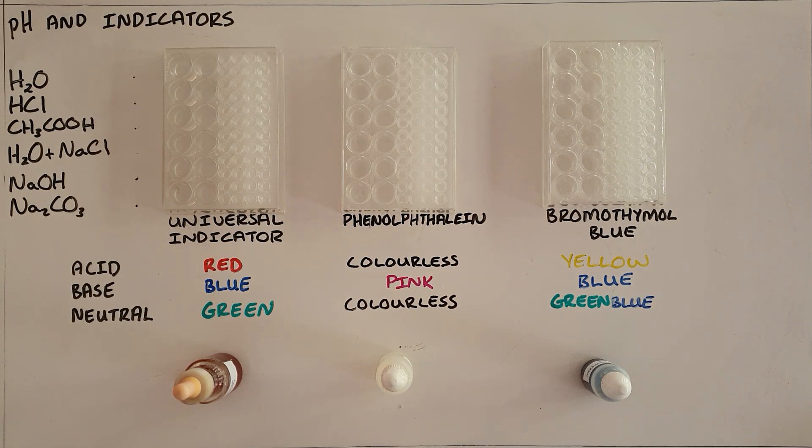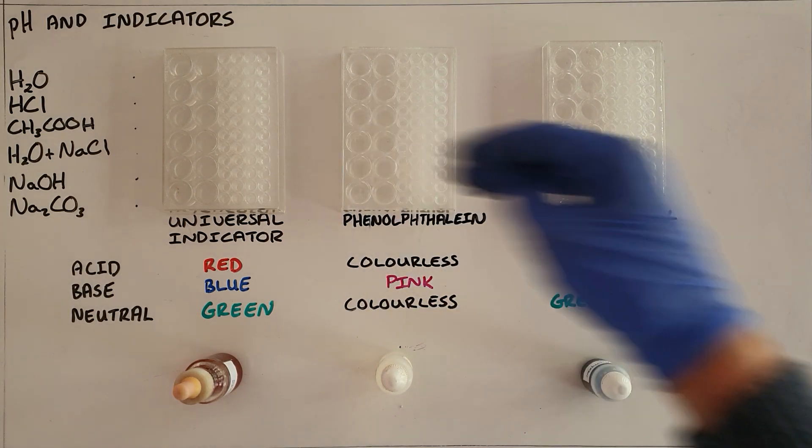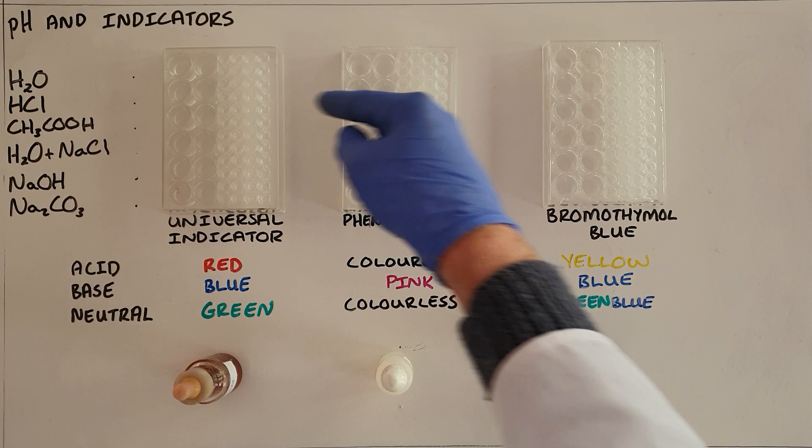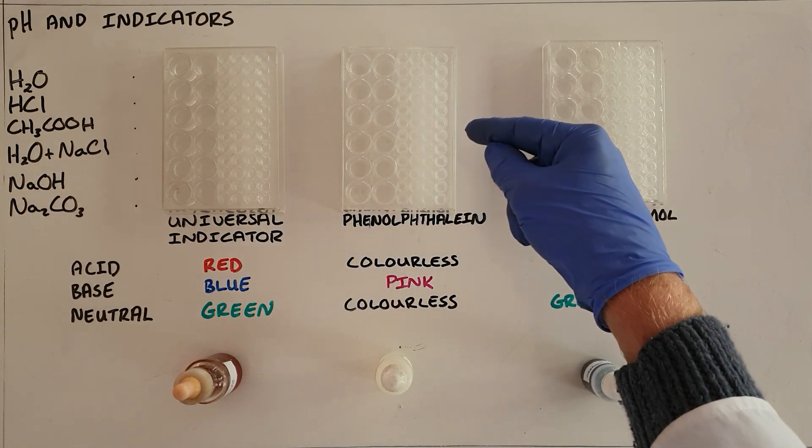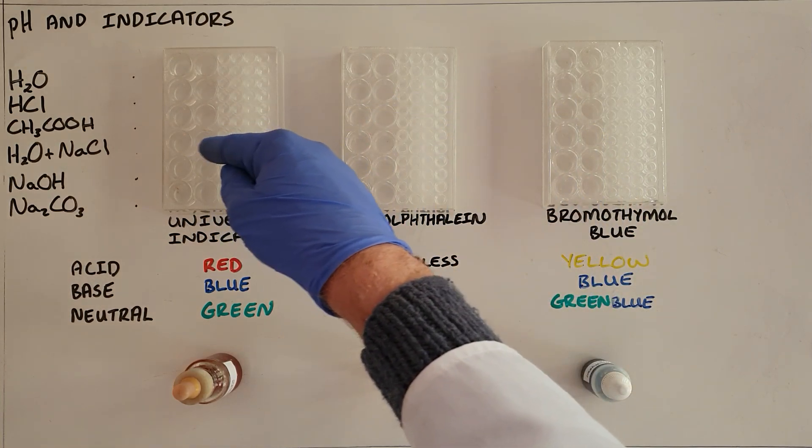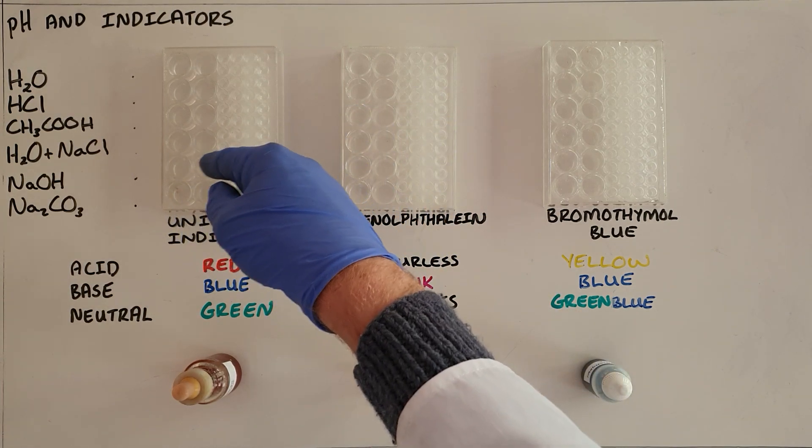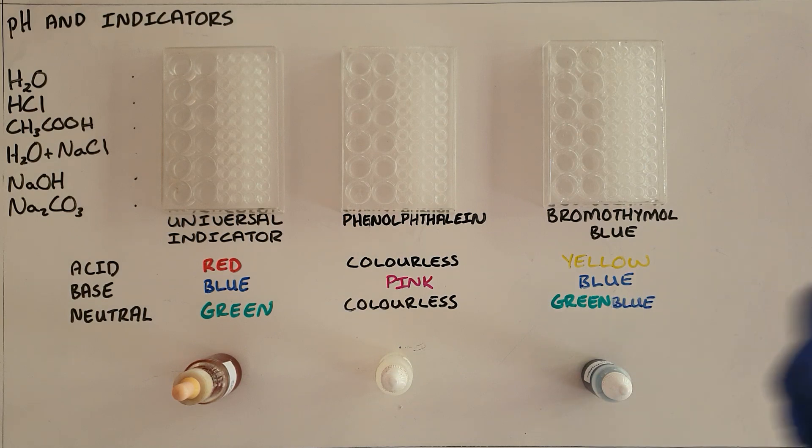Those are the universal indicator, phenolphthalein, and bromothymol blue. And what we've got set up in these combo plates is in the first row we've got water, second row hydrochloric acid, third row acetic acid, the fourth row we've got a combination of water and salt which is salt water, the fifth row we have sodium hydroxide and the sixth row we have sodium carbonate.